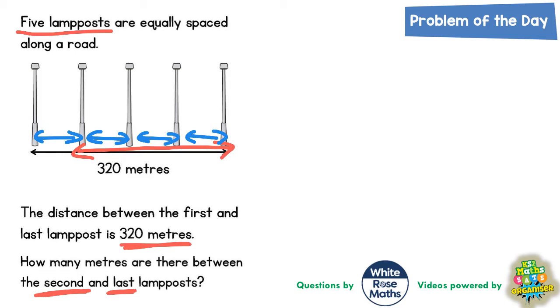think they need to do 320 divided by 5. But there are not five gaps. As you can see here, there's only four gaps: one gap, two gaps, three gaps, four gaps between the five lampposts. So we're not doing 320 divided by 5, we're doing 320 divided by 4.